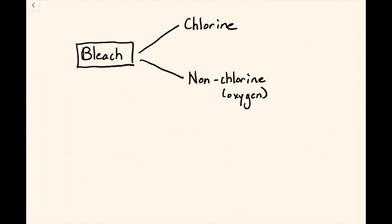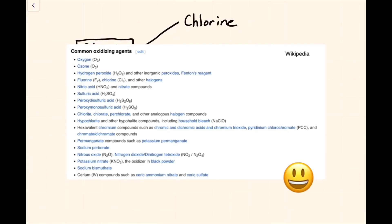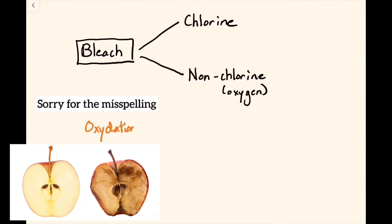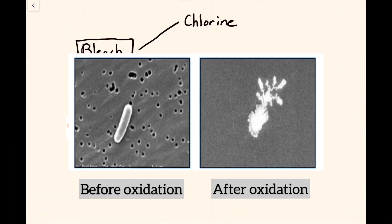They belong to a class of chemicals called oxidative agents. They cause a chemical reaction called oxidation. Oxidation causes dye to lose its color, and it alters vital molecules within cells, causing cells to die.